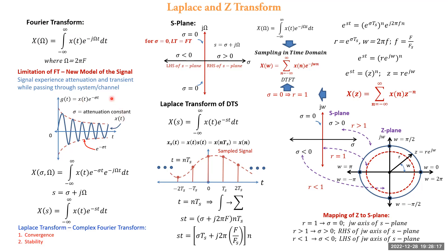This shows the relationship between the fundamental definition of Fourier transform and its extensions. The Fourier transform's limitation is overcome by Laplace transform using an exponentially decaying model, giving information about attenuation and transient experienced by a signal passing through a system. The term e^(−σt) introduces the convergence concept, since the Laplace transform equation may sometimes diverge. The s-plane has three regions, and sampling of the Laplace transform applied to discrete-time functions results in the Z-transform equation.